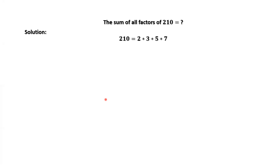First of all, we consider the prime factorization of number 210. 210 equals 2 times 3 times 5 times 7.